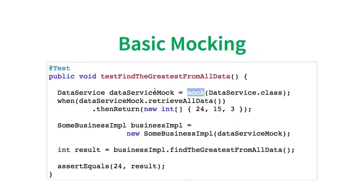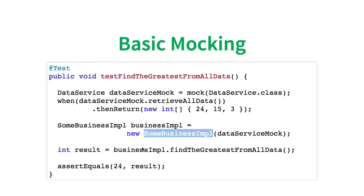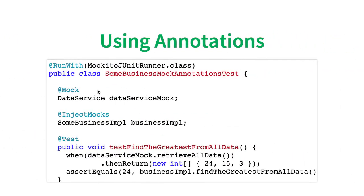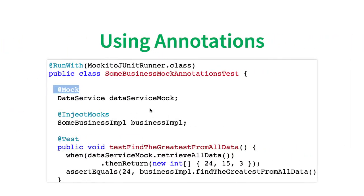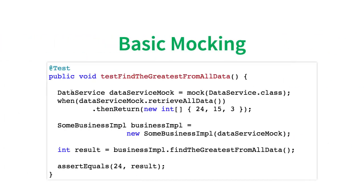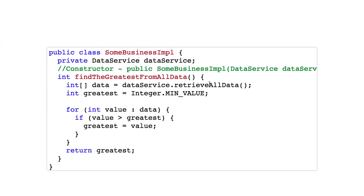Mockito provides methods to mock the data service and you can inject the mock into the business service and write a unit test. Mockito also provides great annotations to do the injection automatically — things like @Mock, @InjectMocks — and use a specific runner so that all the code where you are creating a mock and injecting it in is automatically taken care of. All you focus on is writing code like: when this method is called, then return this. We are passing data 24, 15, 3 and checking whether the greatest is 24, verifying the business logic is working.